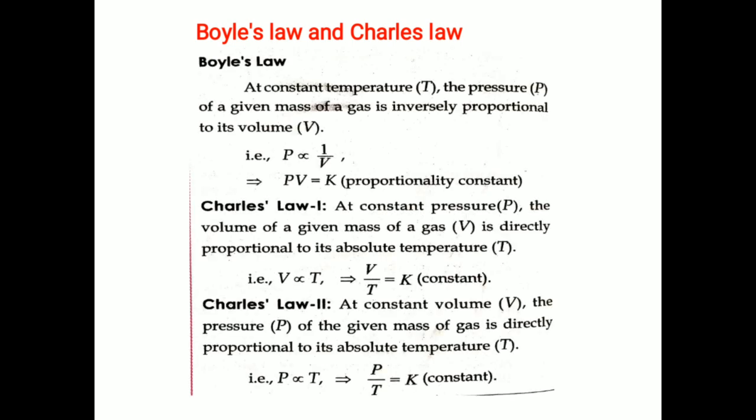Boyle's law: at constant temperature, the pressure of a given mass of gas is inversely proportional to its volume. That is, P is proportional to 1/V, so PV equals constant K. Charles' first law: at constant pressure, the volume of a given mass of gas is directly proportional to its absolute temperature. That is, V is proportional to T, therefore V by T equals constant.